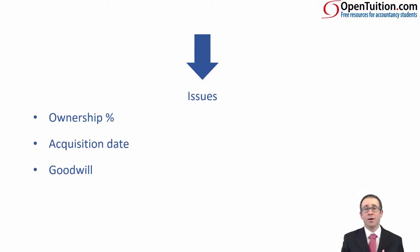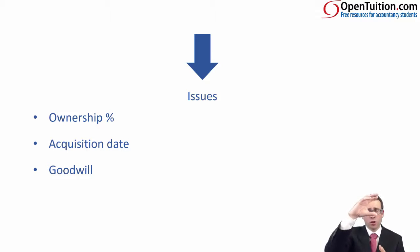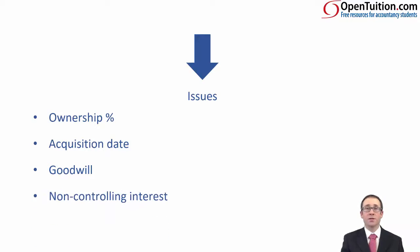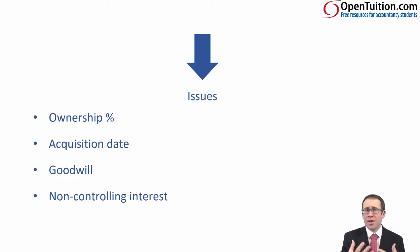We have a sub-subsidiary, so we need to calculate goodwill. We know the standard goodwill calculation: fair value of consideration, plus non-controlling interest, less net assets at acquisition. We need to consider whether any changes to that calculation are required given we are looking at the sub-subsidiary. And last but not least, we need to look at the non-controlling interest — the NCI at acquisition plus the NCI share of the post-acquisition movement in net assets of the sub-subsidiary — and whether any adjustments are needed.